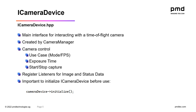An iCameraDevice object is the main interface for interacting with a time-of-flight camera. It can only be created by the Camera Manager. It's through this interface that you can set the use case, the exposure time, start or stop the stream, and register listeners for image and status data. It's important to note that before you use this interface, you have to initialize the iCameraDevice, as shown in the example below.